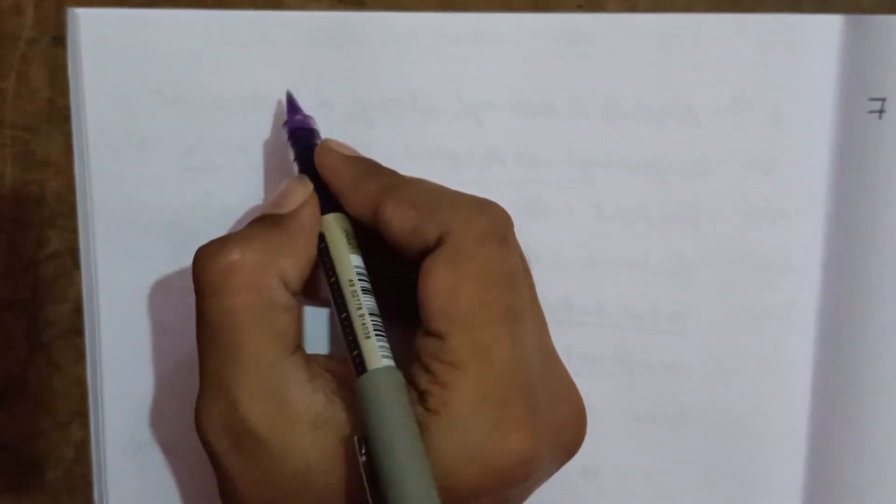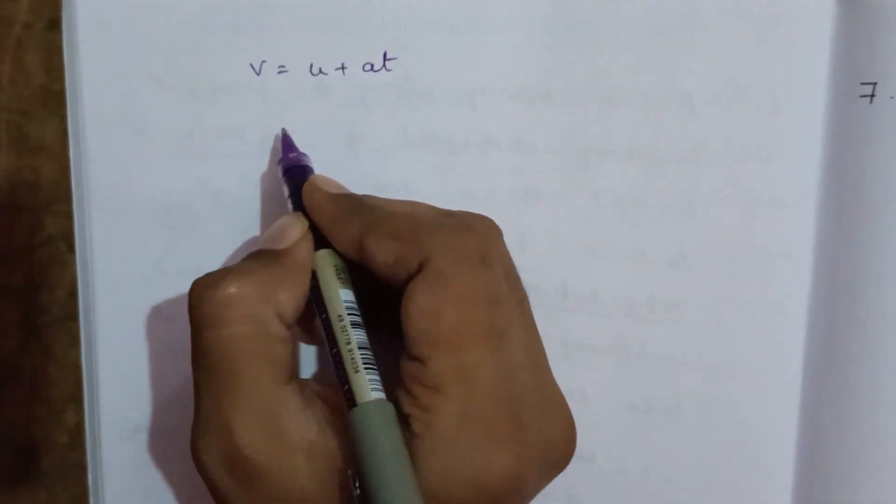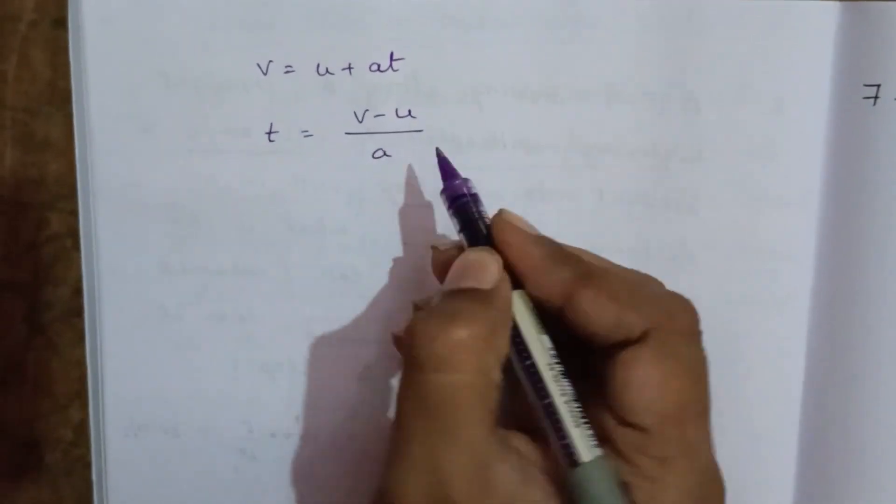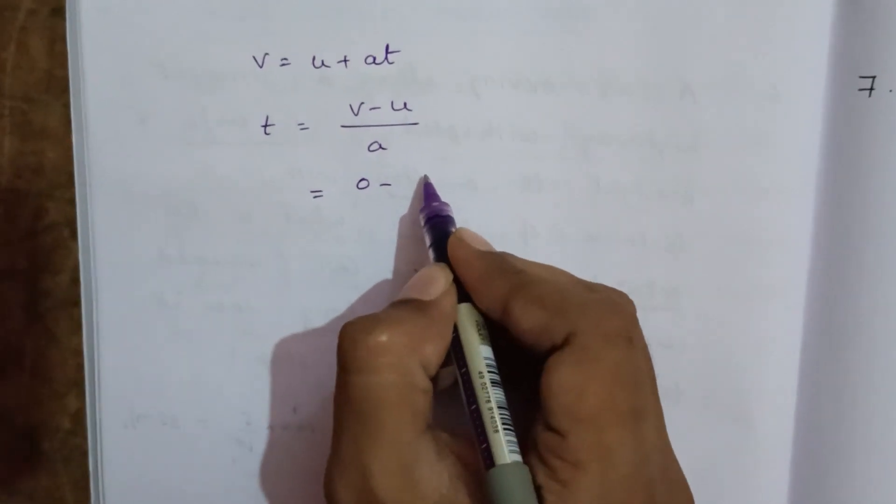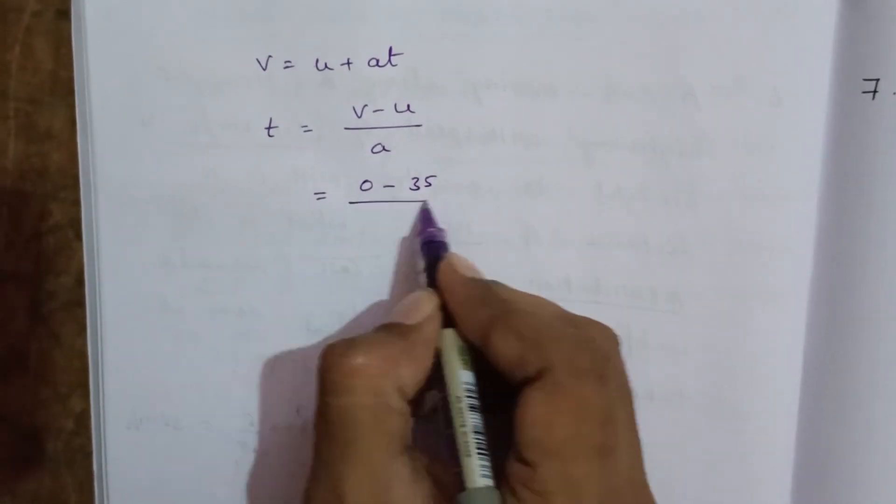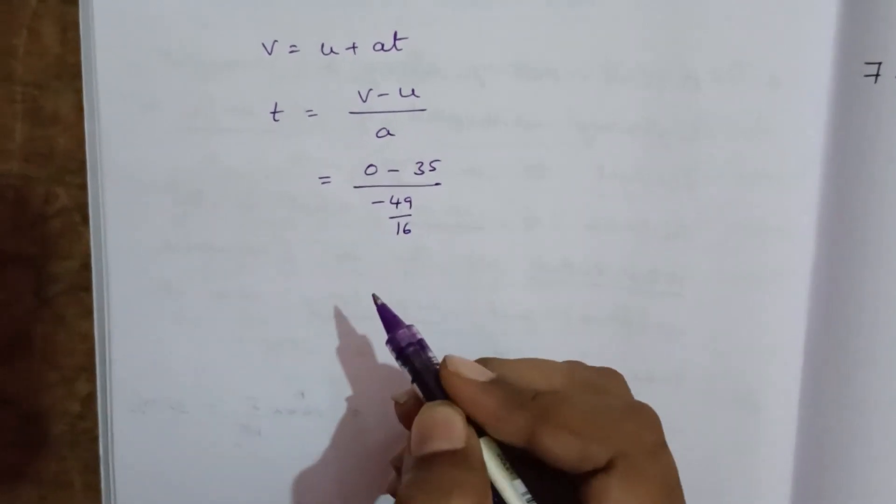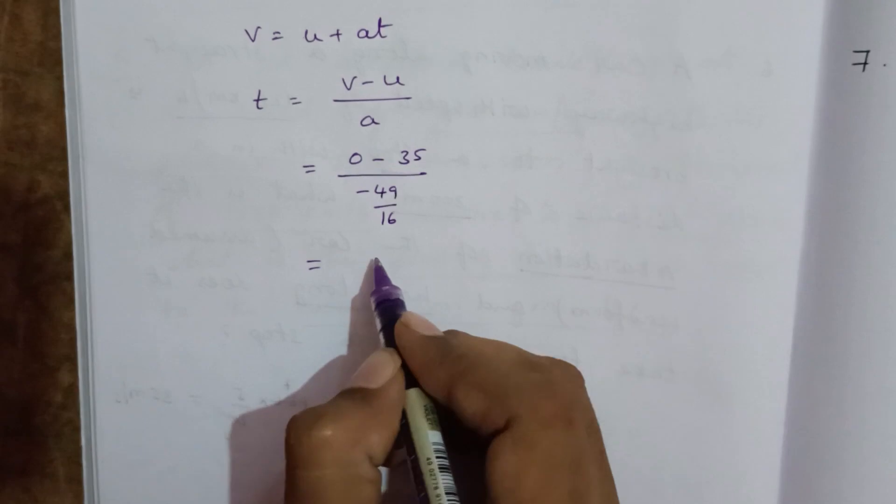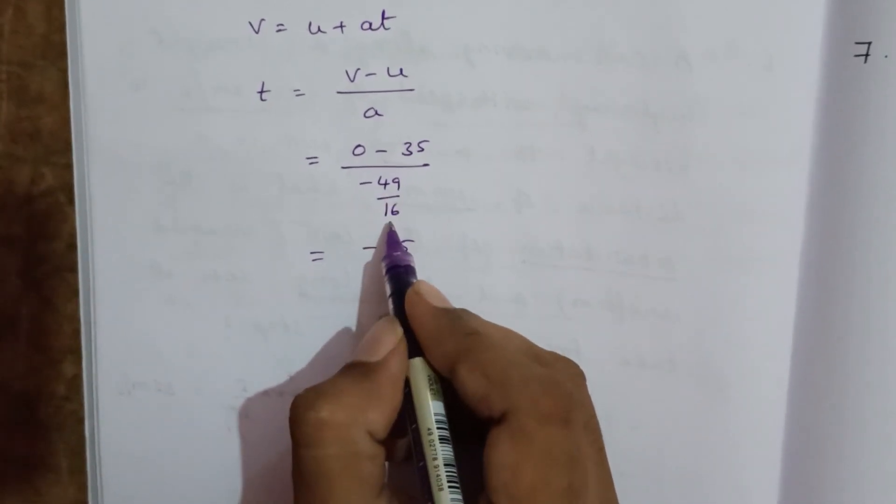First equation: v equal to u plus at. So to find t, v minus u divided by a. As we know, v is 0, u is 35, and a we got minus 49 divided by 16.